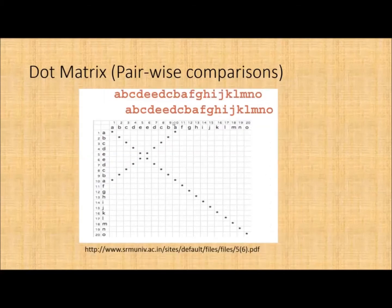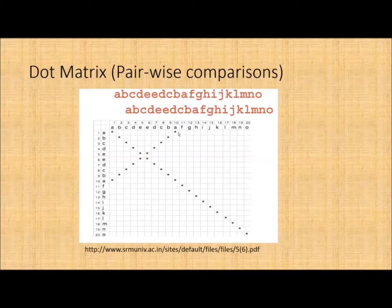In another dot matrix example with sequence ABCDAB, the diagonal is fully populated, showing every term matches. But you also get additional information — there's a sequence of lines telling you that the next part of the sequence is really a reverse of the first part. In a long sequence you might not catch this by eye, but these definite patterns reveal more about the sequence structure.